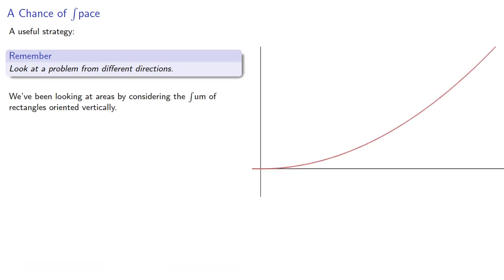A useful strategy in life and in math is to look at a problem from different directions. We've been looking at areas by considering the sum of rectangles oriented vertically, but what if we oriented the rectangles horizontally?